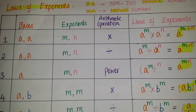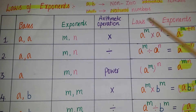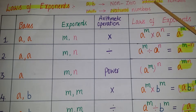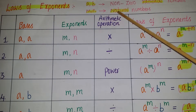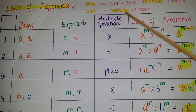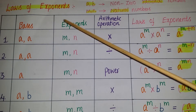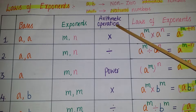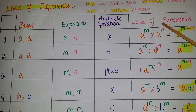Hello everyone, today I am going to tell the laws of exponents — all laws of exponents in one table. In this table, the bases a and b are non-zero rational numbers and m and n are natural numbers. The columns are: bases, exponents, arithmetic operation, and laws of exponents.